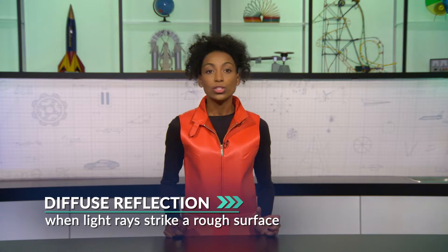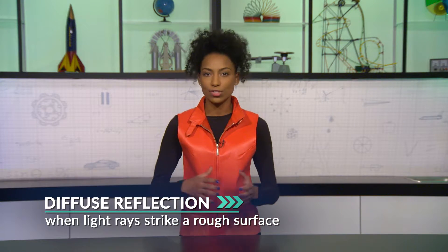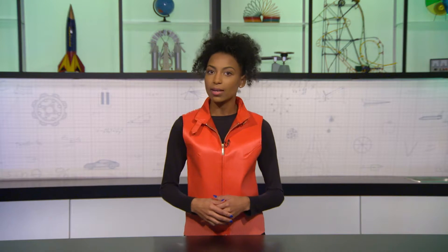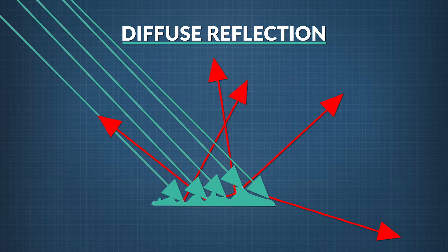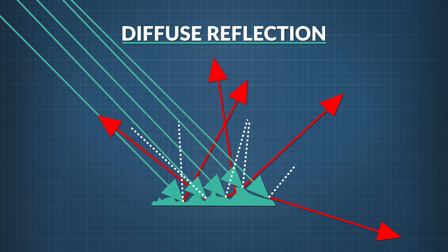The other kind of reflection is called diffuse reflection, which happens when light rays hit a rough surface — that could be wood, cloth, or the leaves of a plant. The roughness of the material means that each individual ray hits a surface that has a different orientation. The normal line at the point of incidence is different for different rays because of the irregularities in the surface. That's why the light rays are reflected in many different directions, but these rays still obey the law of reflection.